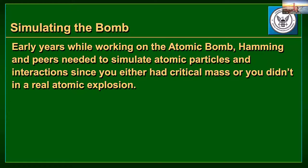As we know, Hamming helped develop the atom bomb. While working on it, he and his peers found the need to simulate how the exterior shells of the bomb would collapse — what the atomic forces were going to be, the physical forces on different parts of the bomb, and the radioactive effects. Being able to measure that at each different part gave him insight on how the actual atomic bomb explosion was going to happen.